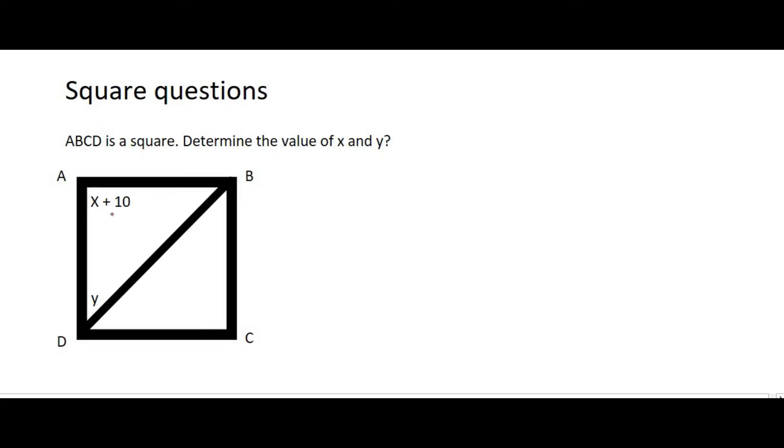So, we have to work out x and y, and we are told that this shape is a square. We know that the corner angles of a square add up to 90 degrees. And so, we can say that x plus 10 must equal 90 degrees. And there you can say angles of square. And so, if you work that out, you're going to end up with x is equal to 80 degrees. Okay, so we have that.